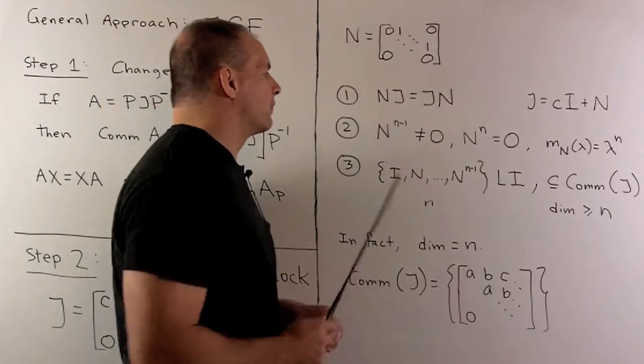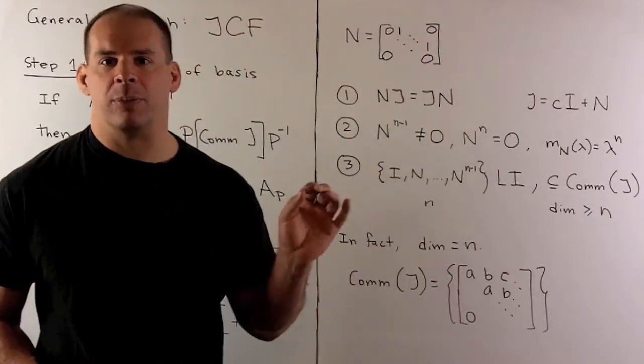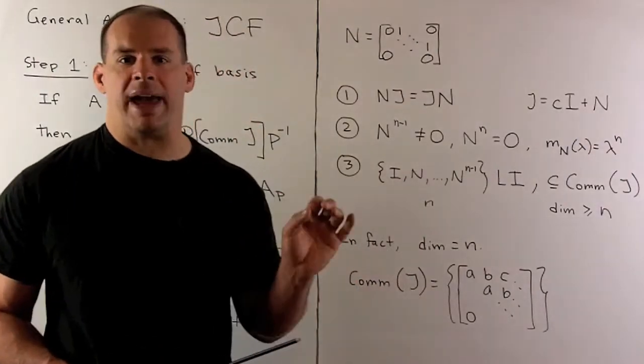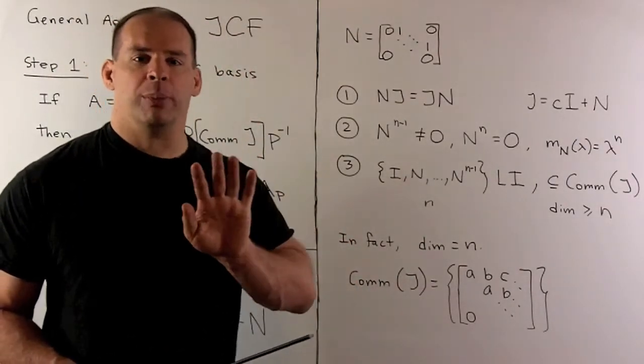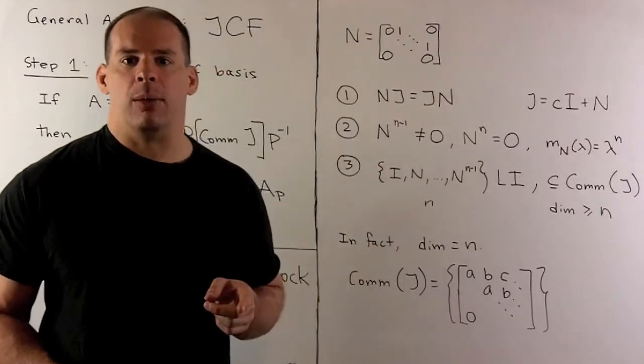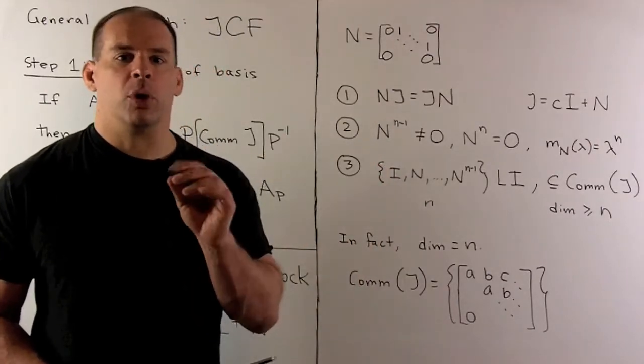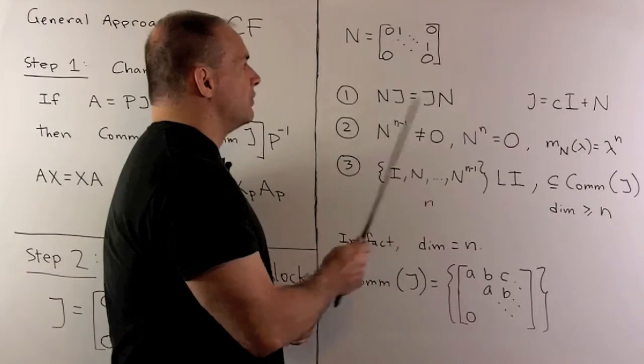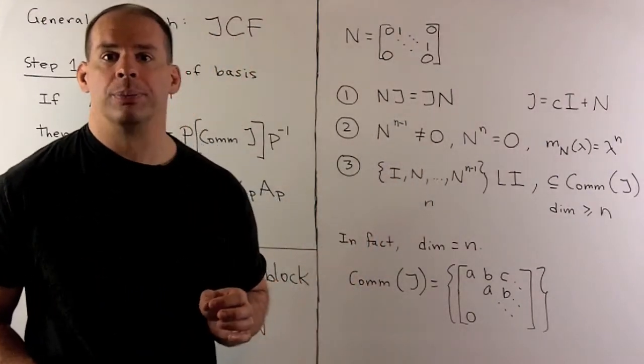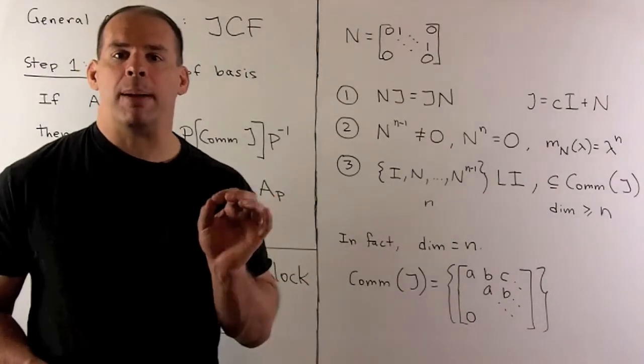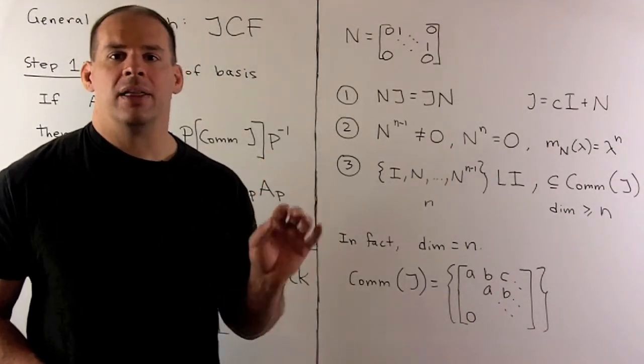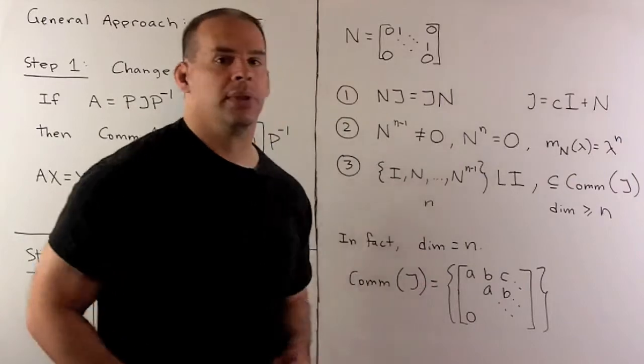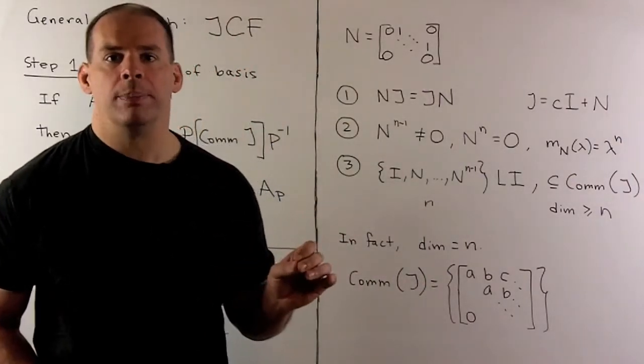Then, N to the N minus first power is not zero, but N to the Nth power is zero. We'll see in a little bit. If we multiply any matrix on the right by N, the effect is to shift your matrix to the right by one, fill in the first column with zeros. So if we multiply N by itself N minus one times, we're just going to shift enough so that we have zeros everywhere except for a one in the upper right-hand corner, so non-zero. If I multiply by one more N on the right, then that one is going to get pushed off. We'll have zeros everywhere. So N to the Nth power is zero.